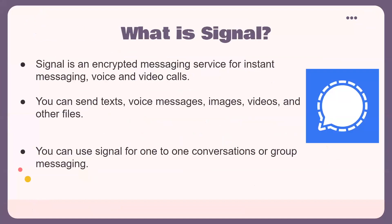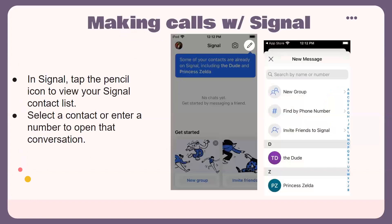Signal is an encrypted messaging service for instant messaging, voice, and video calls. You can send text, voice messages, images, videos, and other files. You can use Signal for one-on-one conversations or group messaging.